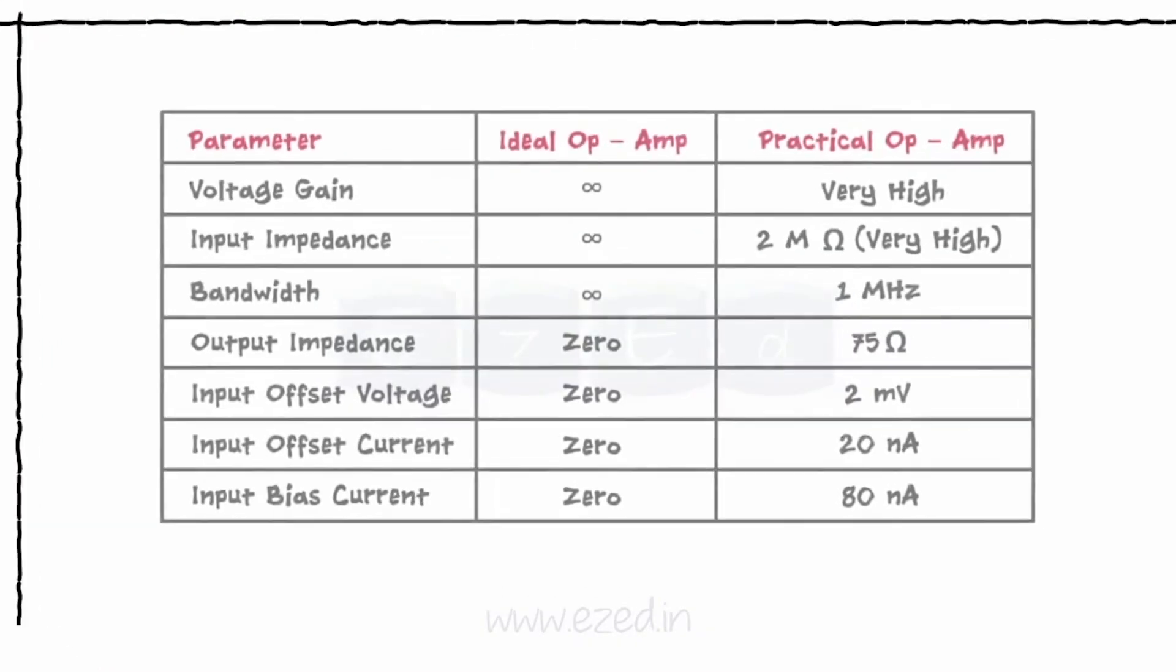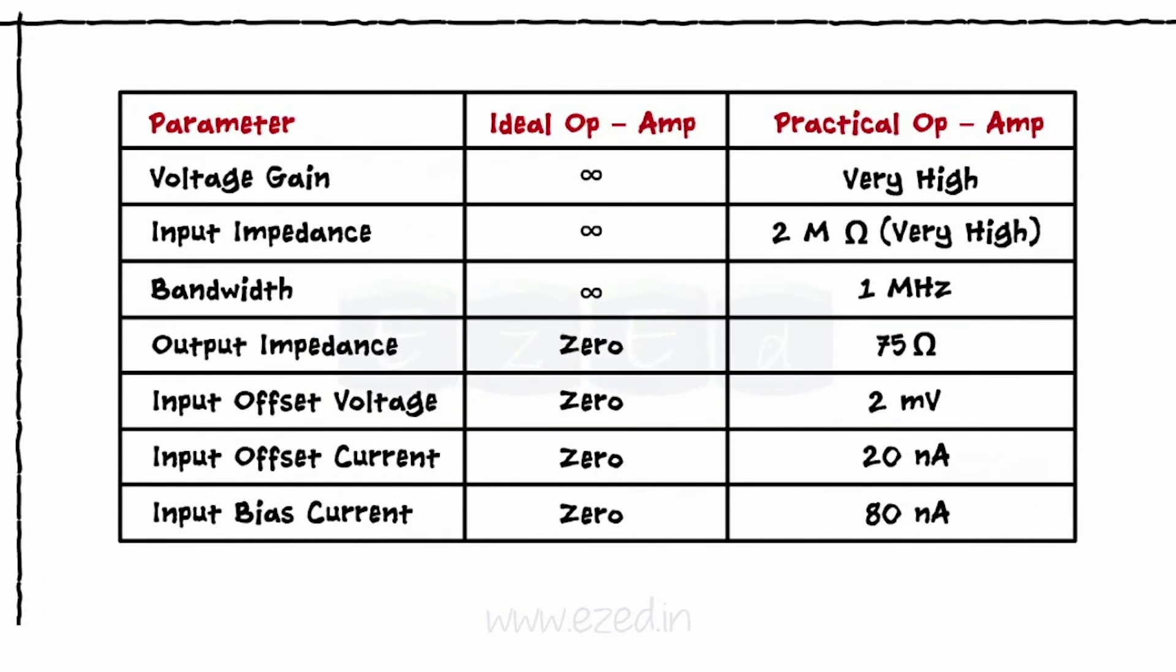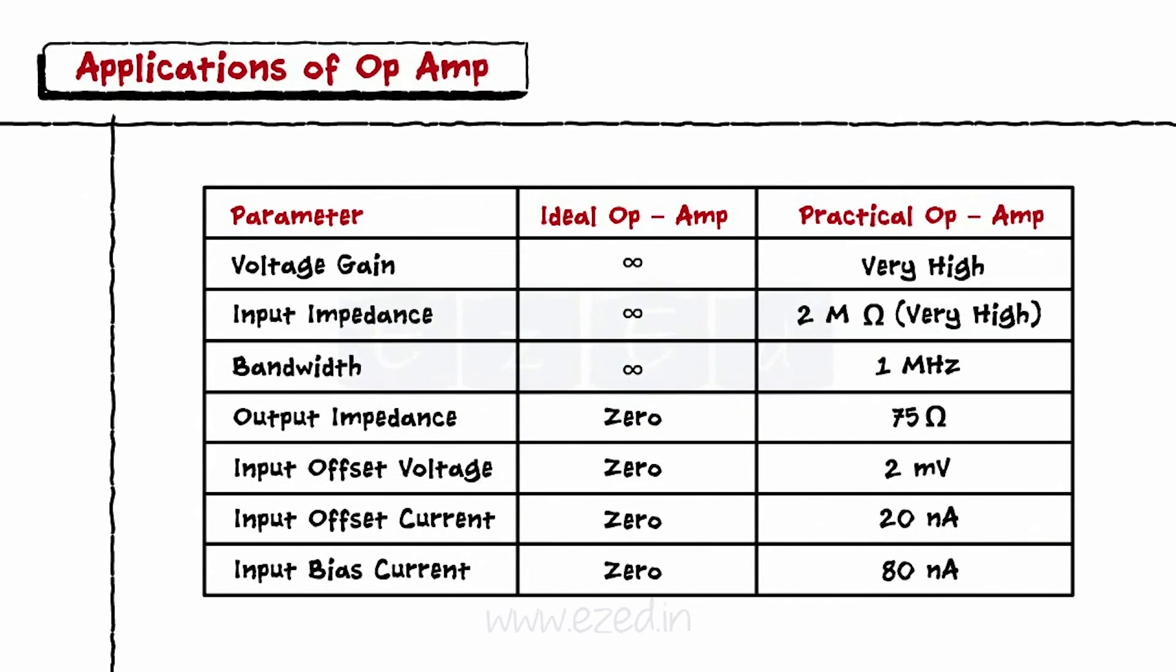When we differentiate the ideal Op Amp from the practical Op Amp, we find some changes in the parameter values, which are represented by the following table.